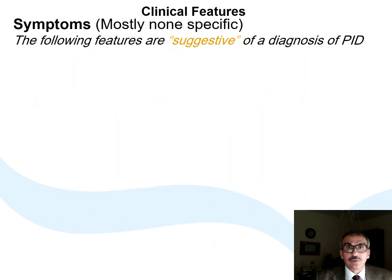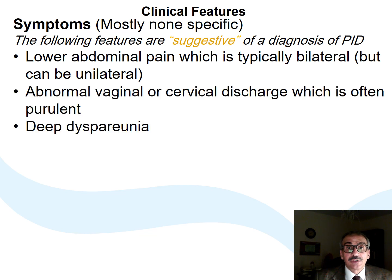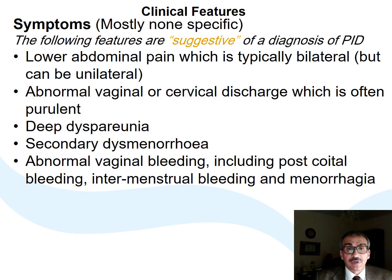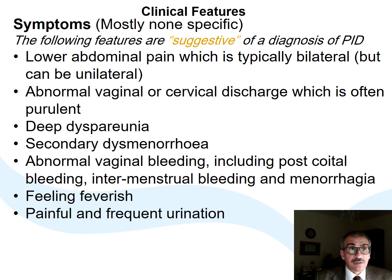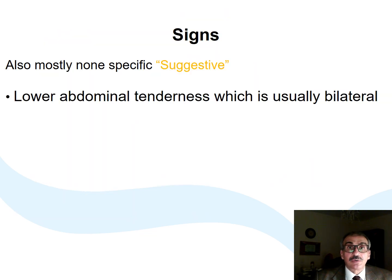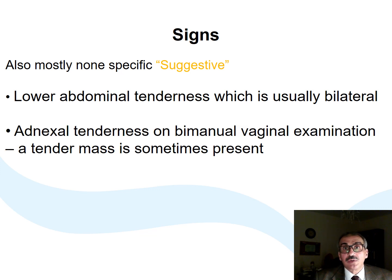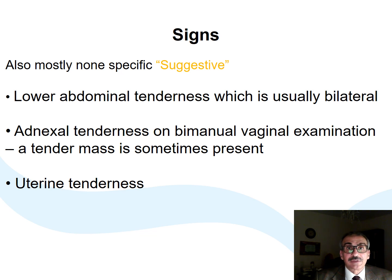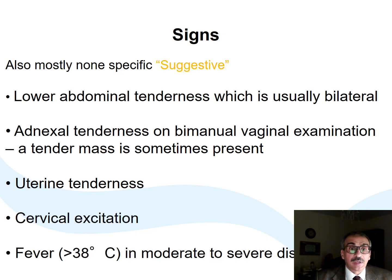The PID diagnosis dilemma starts from its mainly non-specific symptoms like pain, discharge, dyspareunia, dysmenorrhea, various types of abnormal vaginal bleeding, feeling feverish, dysuria, and frequency. Signs are also non-specific, like tenderness in the lower abdomen; vaginal examination might query a tender pelvic mass, uterine tenderness, positive cervical excitation, and fever over 38 degrees centigrade in moderate and severe cases.